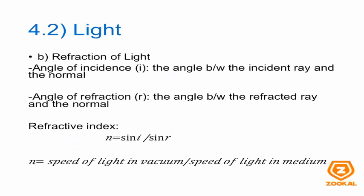Part B: Refraction of light. For refraction, again there are terms you need to know. The angle of incidence is the same as in the reflection part. The angle of refraction is the angle between the refracted ray and the normal. For refraction, there is also something known as the refractive index, represented by n.